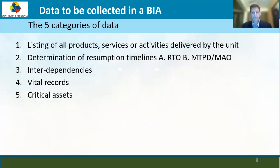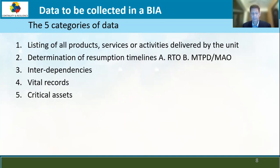Based on these impacts, you figure out the timeline for resumption. There are five categories in a sequential process for the data you need to collect in a BIA. Number one: make sure the unit or organization can list down all its products, services, or activities — each and everything, small or large; don't leave anything out. Number two: for all of them, what should be the resumption timeline? Based on impact, you look at two timelines — MTPD or MAO, the worst-case timeline, and RTO, the best-case timeline.